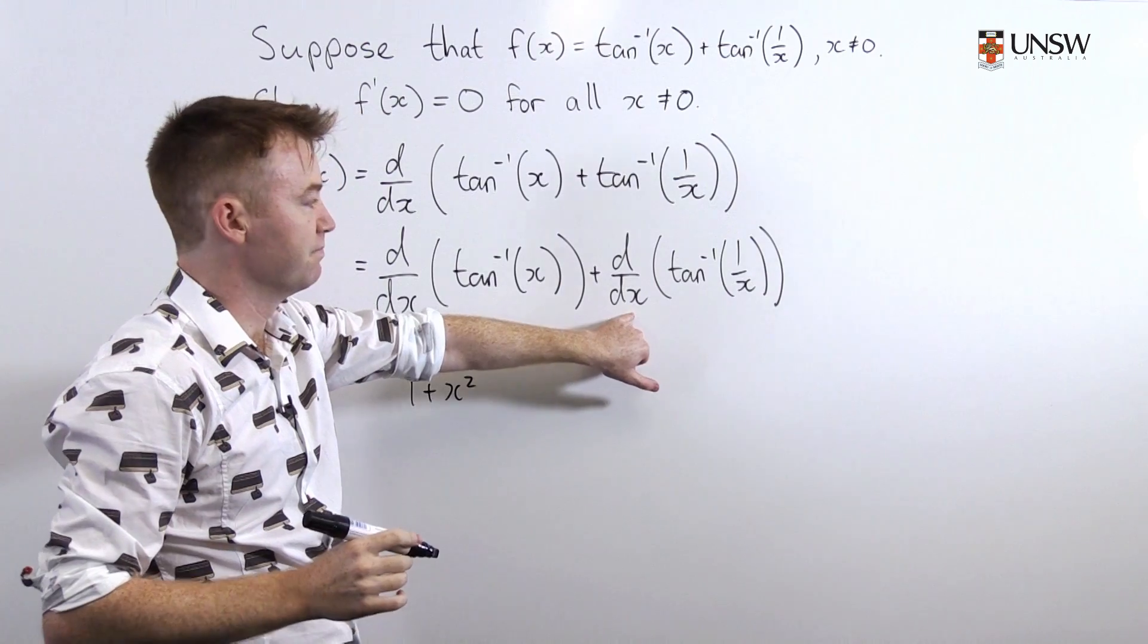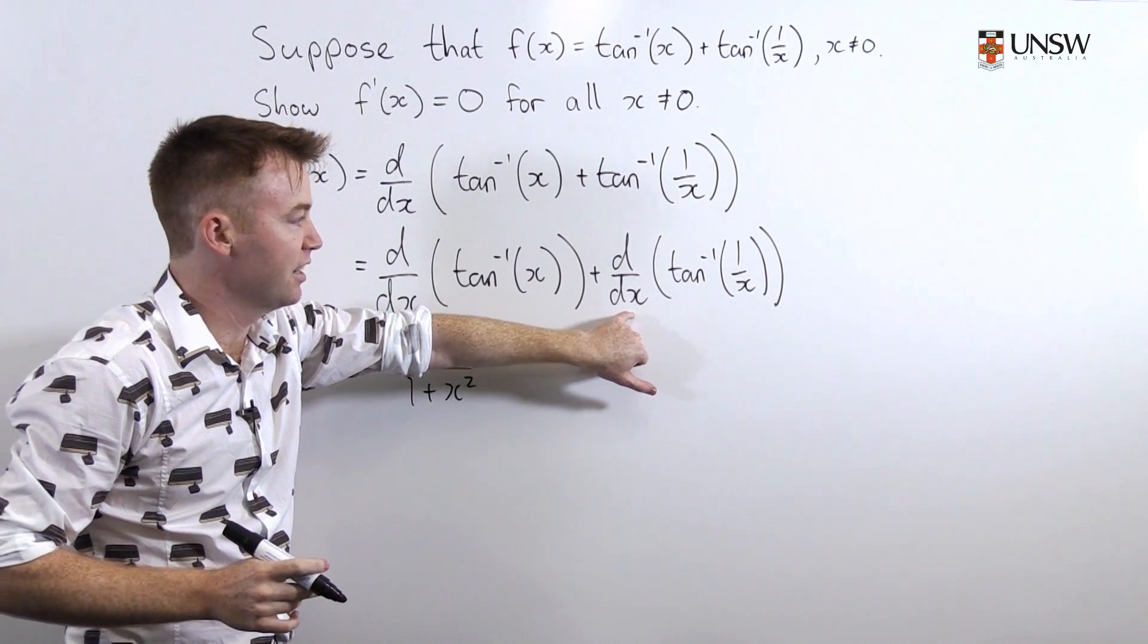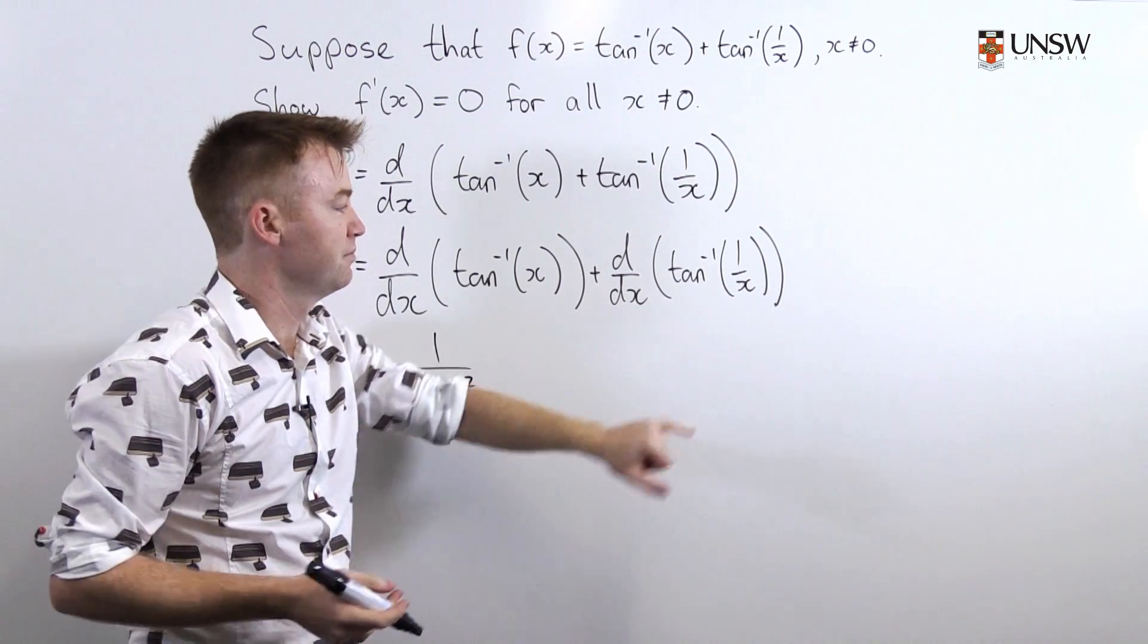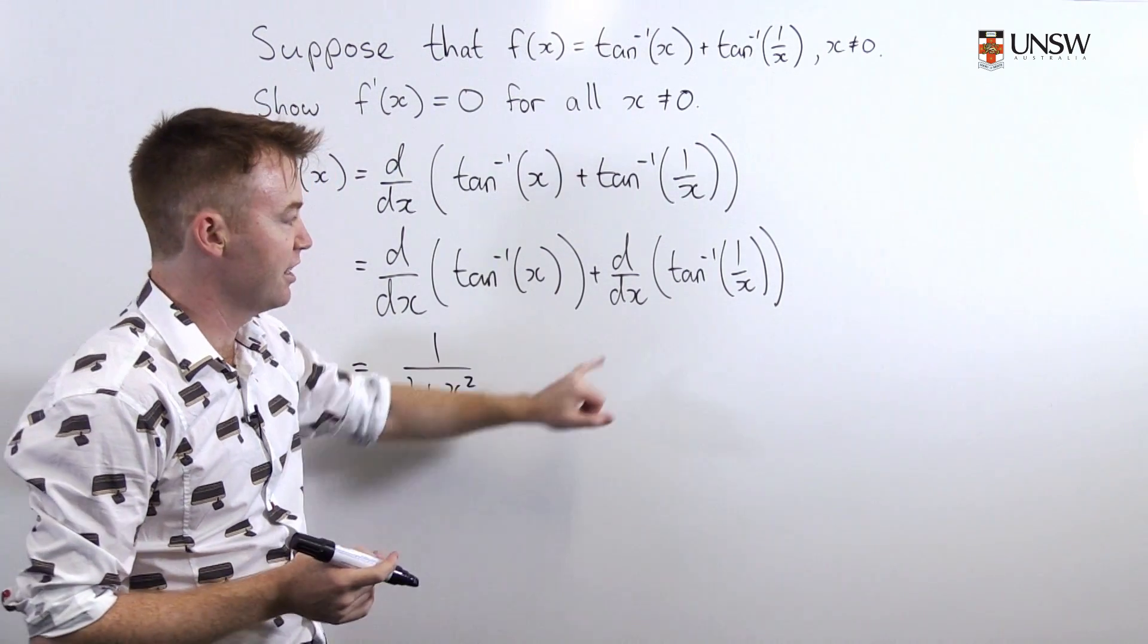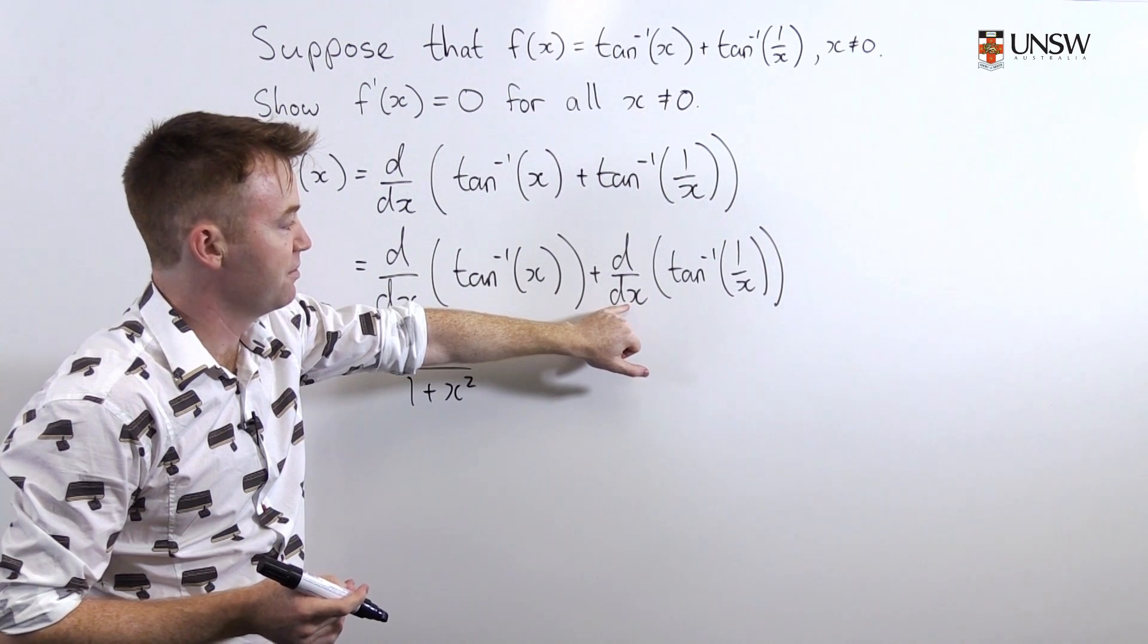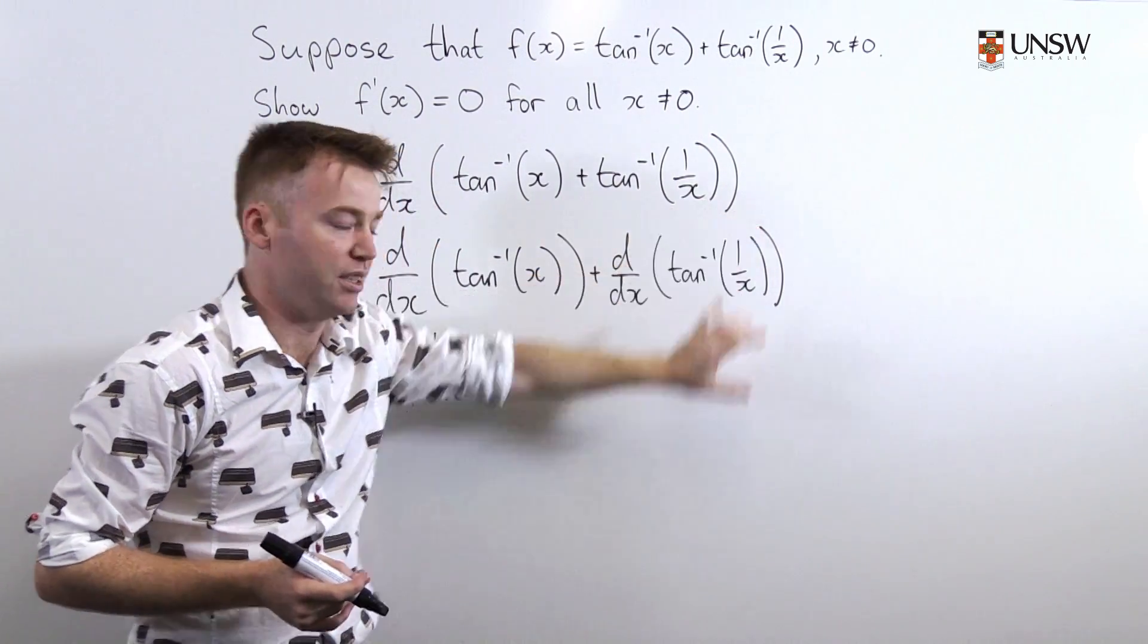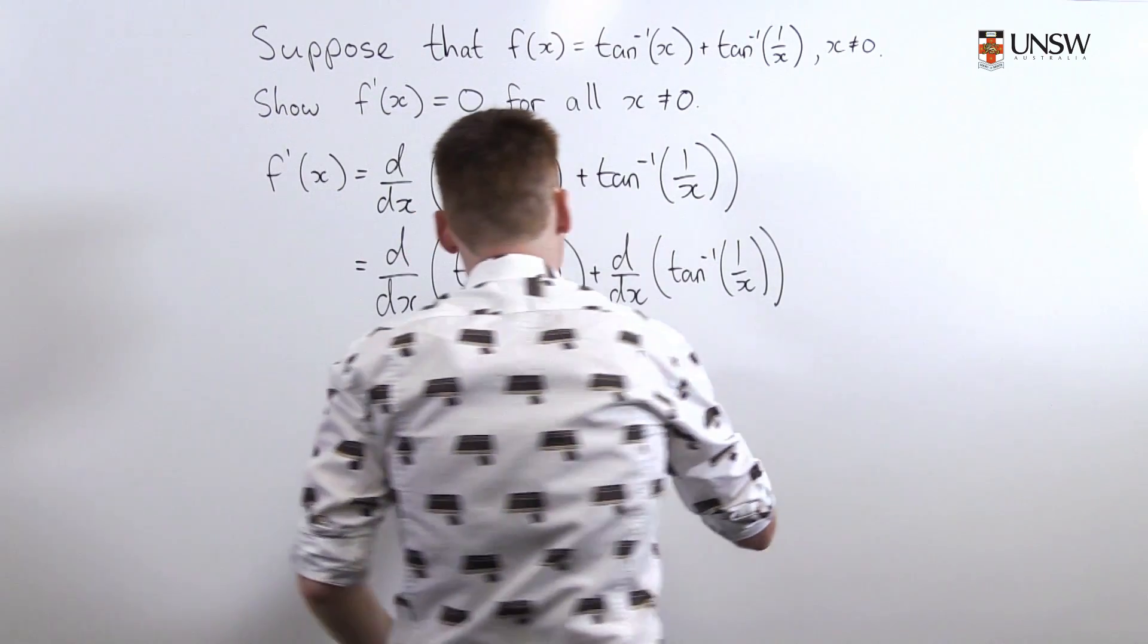This one, hmm, this one's a bit more tricky. I'd like to take the derivative of this with respect to 1/x because then it's just 1/(1 + (1/x)²). But I can't do that straight up because I've got this x here and this symbol here doesn't match this symbol in here. So I can use a chain rule to make it work.